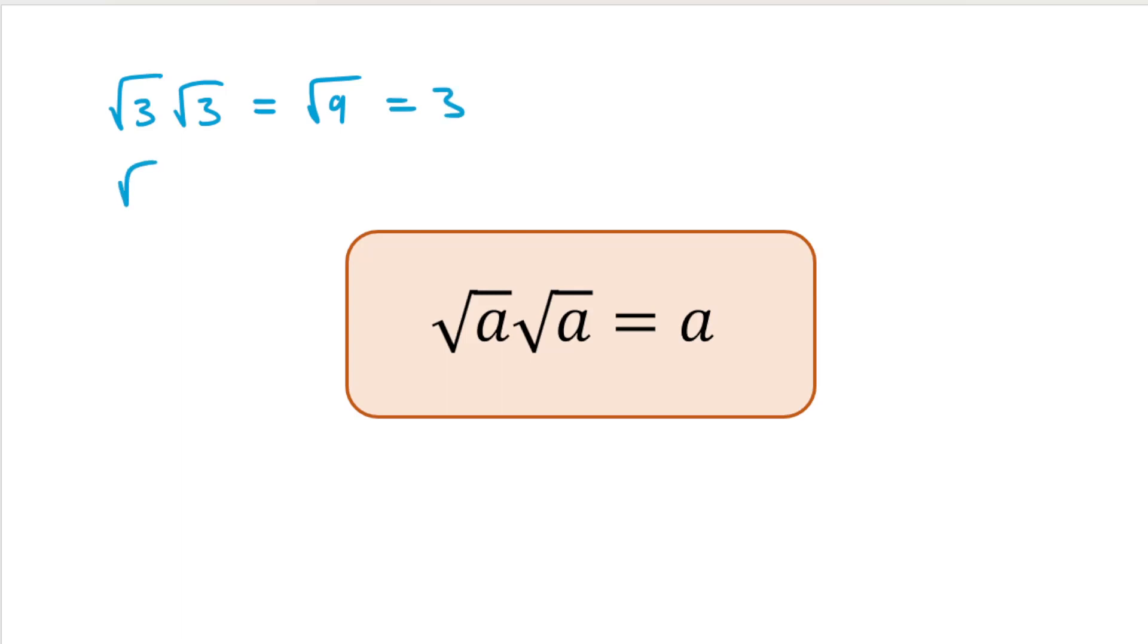Same thing. If we did root 5 times root 5, that would be equal to root 25, which is just 5. But of course, this idea is really quite simple because when we say root A times by root A, what we really mean is root A squared, right? Because something times by itself is that thing squared. And the square root of A squared is just A.